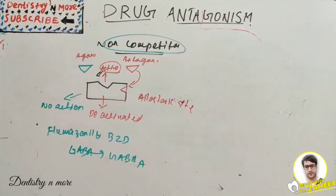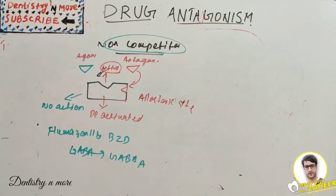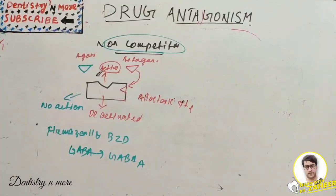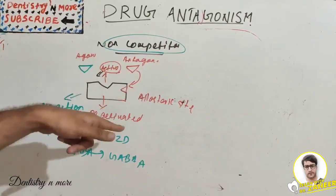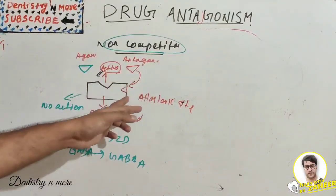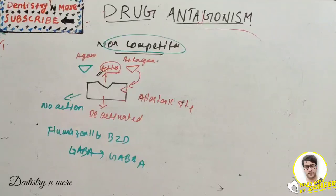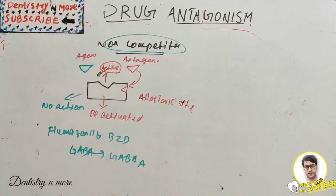That covers all types of direct antagonism: physical, chemical, functional, and pharmacological. In pharmacological antagonism, the key distinction is that in competitive antagonism there is competition for the active site, while in non-competitive antagonism the antagonist binds to an allosteric site and deactivates the molecule. Understanding the core concept makes it easy to explain rather than memorize. More pharmacology topics coming soon — thank you!